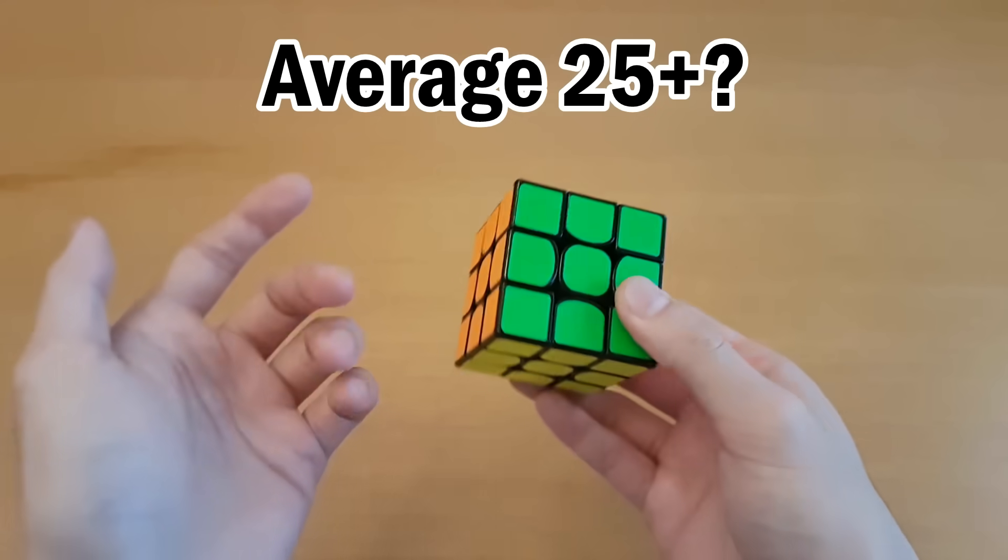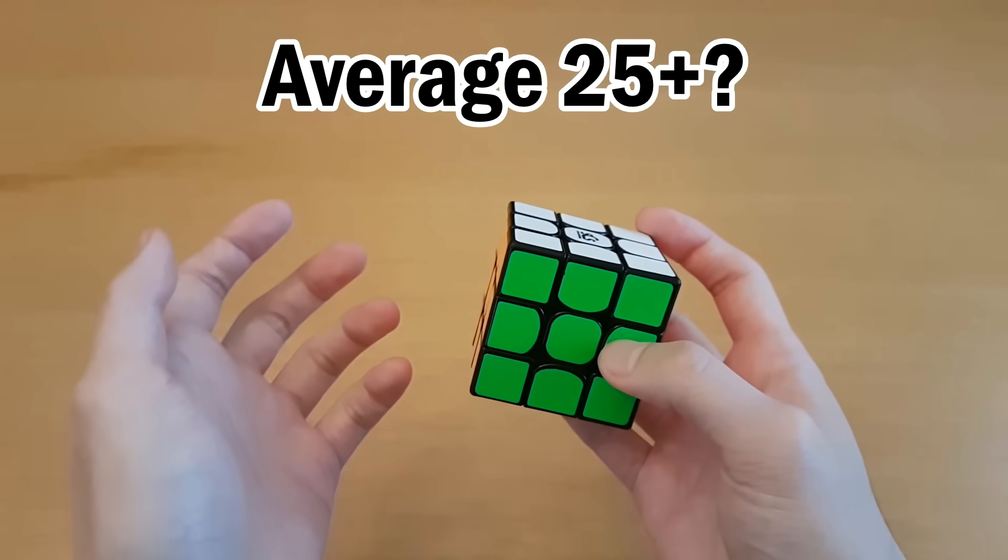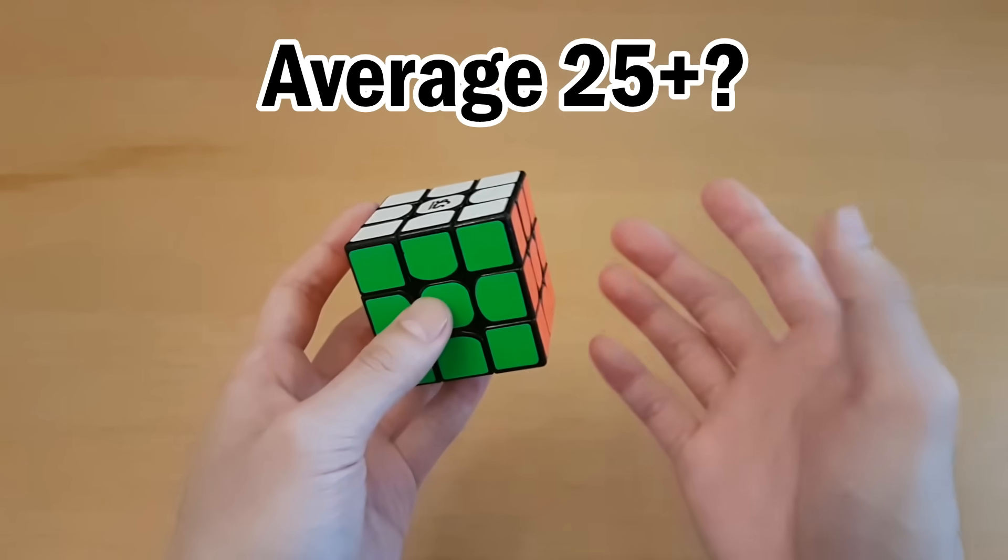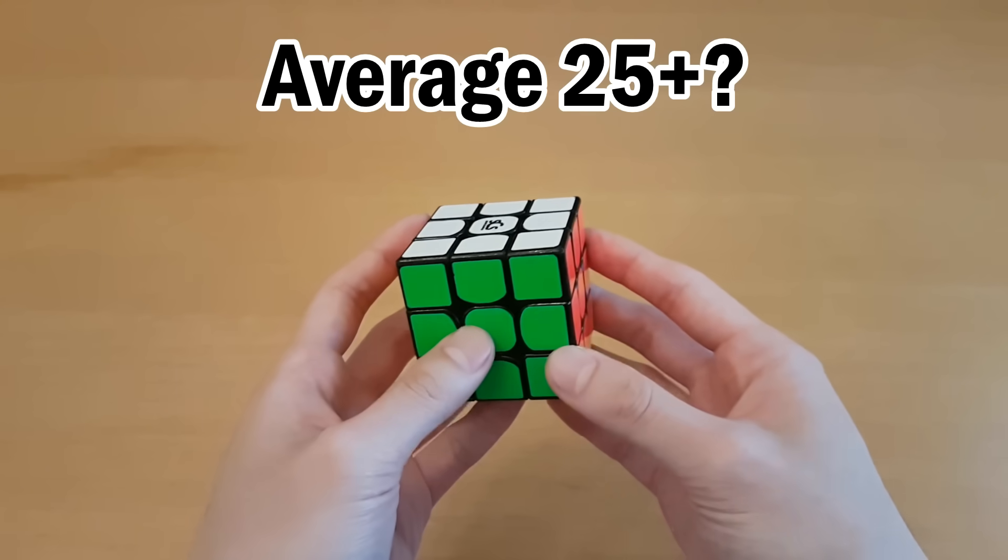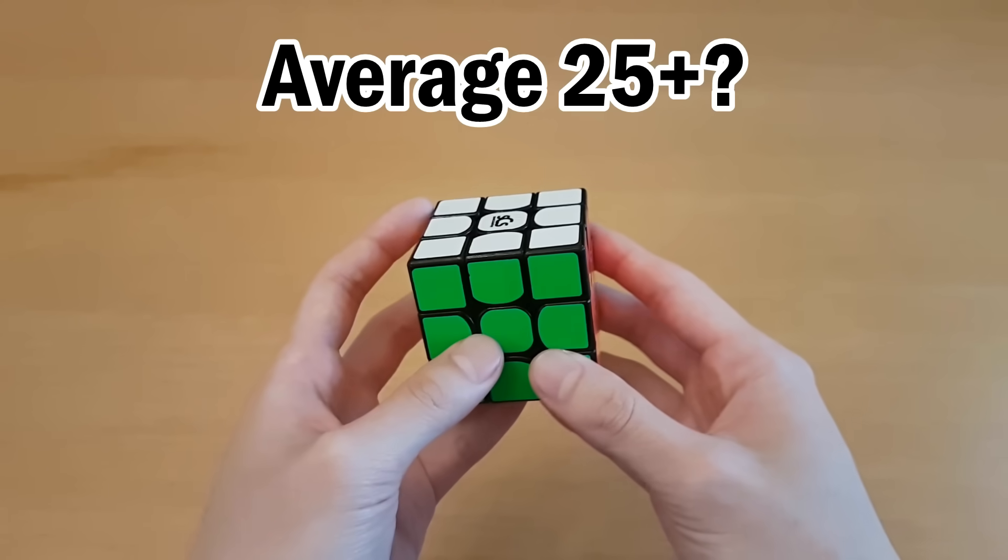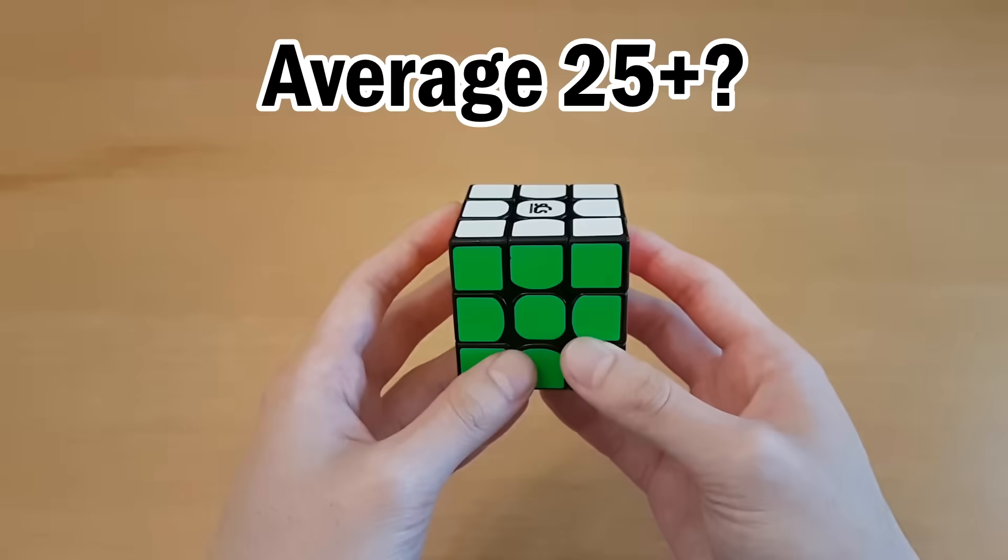You may average over 25 and still find all of those to be true for you because you happen to turn slower than other people, and that's totally fine. Just make sure you're honest with whether or not you can do those things. Otherwise lookahead won't really be useful to you at all, and you should keep working on those. Now we'll talk about the most important thing about lookahead.